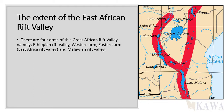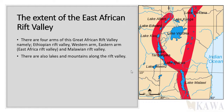There are four arms of the Great African Rift Valley: the Ethiopian Rift Valley, which is up here; the Western Rift Valley; the Eastern Rift Valley; and the one which extends down here — it is called the Malawian Rift Valley.